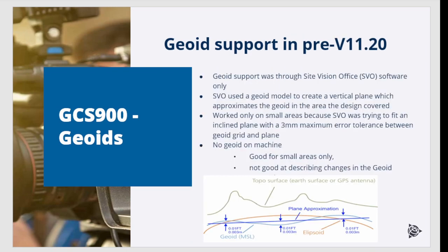We will start with a reminder on how GeoEat support works in GCS 900 versions up to 1120. To be able to use a GeoEat model, the designs had to be created in SiteVision Office software. For GeoEat support, SiteVision Office tried to fit an inclined plane over the GeoEat grid model. SiteVision Office had a hard-wired 3 mm tolerance, which means the maximum allowed vertical distance between the GeoEat surface and the inclined plane could only be 3 mm or less. This worked for small areas only.